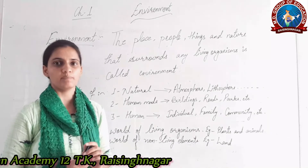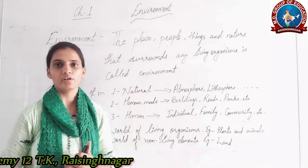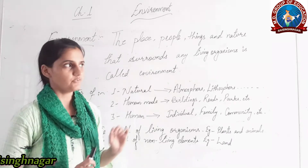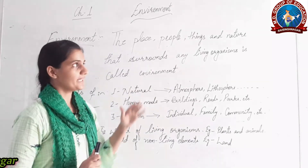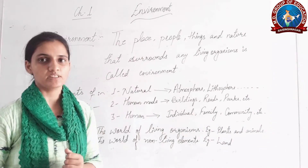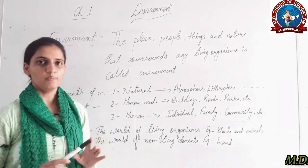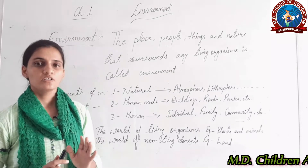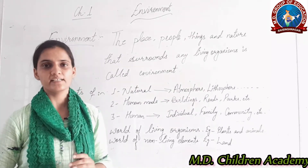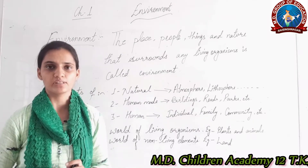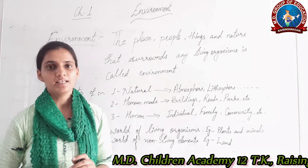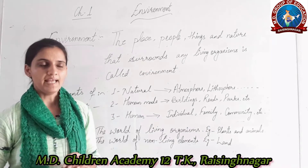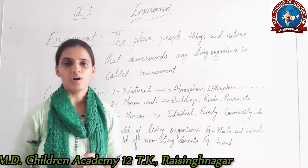We have already discussed 5 chapters of your geography book. So beginning the chapter Environment — according to your book, the chapter begins with a student named Ravi who visited his school after summer vacations. He saw that the playground next to his school campus was dug up, and he was very disappointed to see all this.